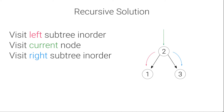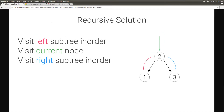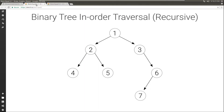Let's run through a quick and simple example to see how this works. Here we have a simple binary tree. We start at the root node 1, and we're going to visit everything on the left in order. So we're going to have now root 2.